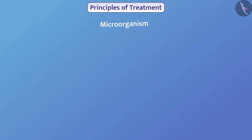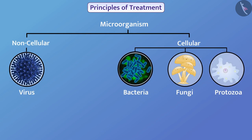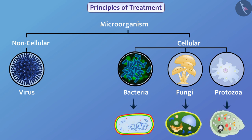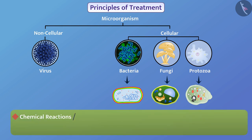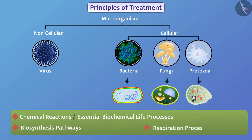Different microorganisms are classified into different groups, and the body organization of organisms of different classes is different. Therefore their cellular structure is also different. In the organism of each class, the chemical reactions, i.e. essential biochemical life processes — the biosynthesis pathways and the respiration process — are different. Therefore, chemical reactions occurring in an organism of one class do not occur in organisms of other classes. That is why treatment of the disease is done on the basis of the class of the causative pathogen.